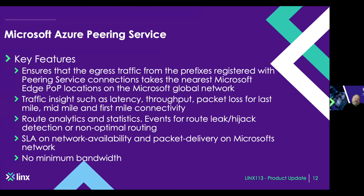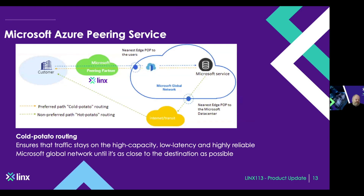What it does is provide a kind of priority peering service that also bypasses some other requirements. Microsoft ensures that if you use this service, traffic will always use that connection as the priority and not re-route through others unless this connection is down. You get additional data and traffic insight on the Azure portal for your prefixes, monitoring capabilities for your prefixes, and an SLA on the Microsoft part of the service. So you get an end-to-end service with no minimum bandwidth. It uses what we call cold potato routing — the traffic stays on the Microsoft network as long as possible and leaves at the nearest edge to your connection through the Azure Peering Service.